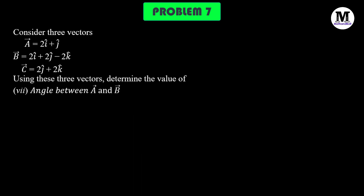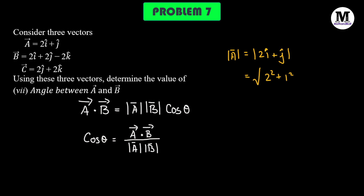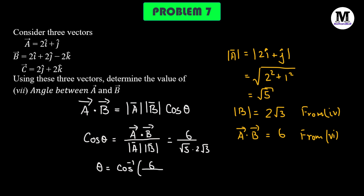Problem number 7: we need to find out the angle between vector A and B. We use the definition of the scalar product: A dot B is given by the magnitude of A times magnitude of B times cosine of theta. So cosine of theta equals A vector dot B vector divided by modulus of A times modulus of B. The magnitude of vector A is square root of 2 squared plus 1 squared, which is square root of 5. The magnitude of B is 2 times square root of 3, and the dot product A·B is 6. Substituting gives cosine theta equals 6 over 2 times square root of 15, so theta equals cosine inverse of that, which gives us 39.23 degrees.